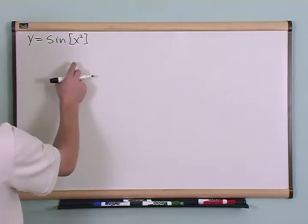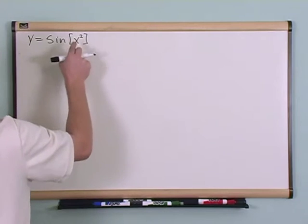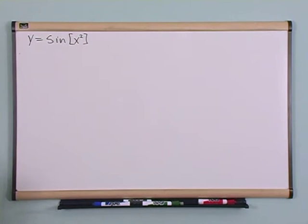So if you were to plot this, for every value of x, you'd square it, and then you would take the sine. After you've squared the value, you'd take the sine.